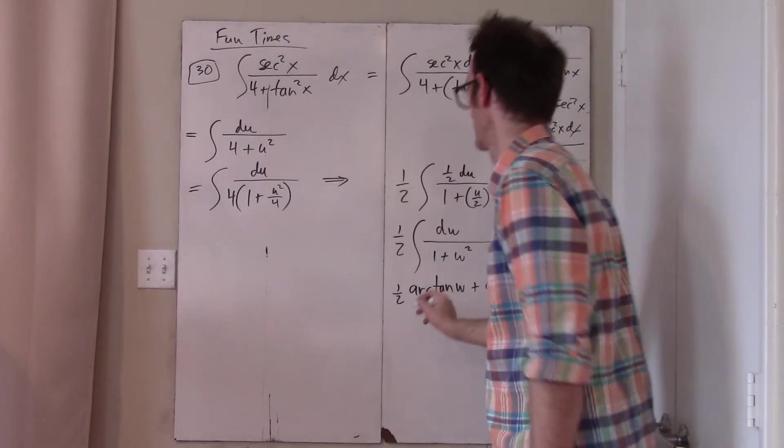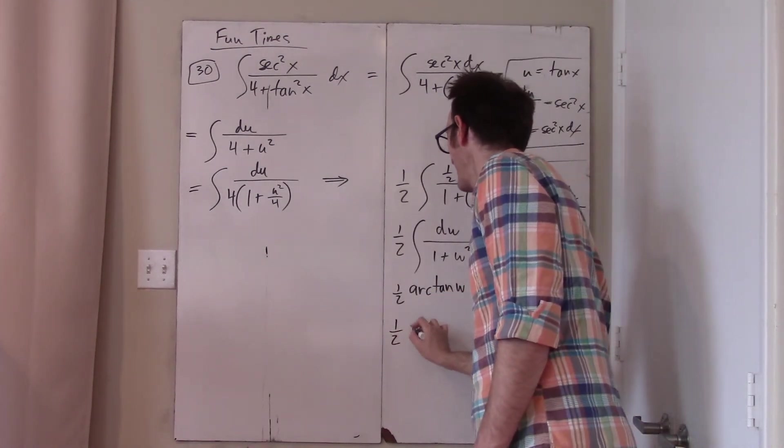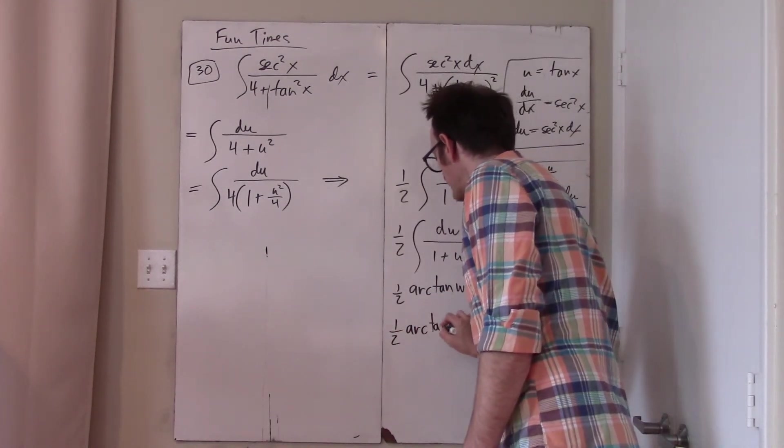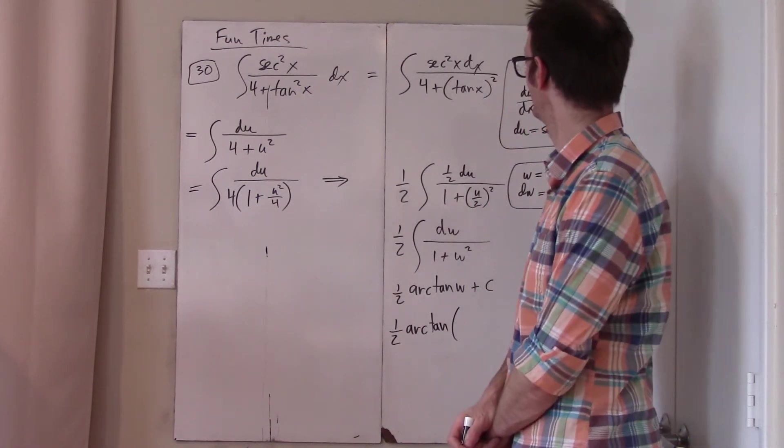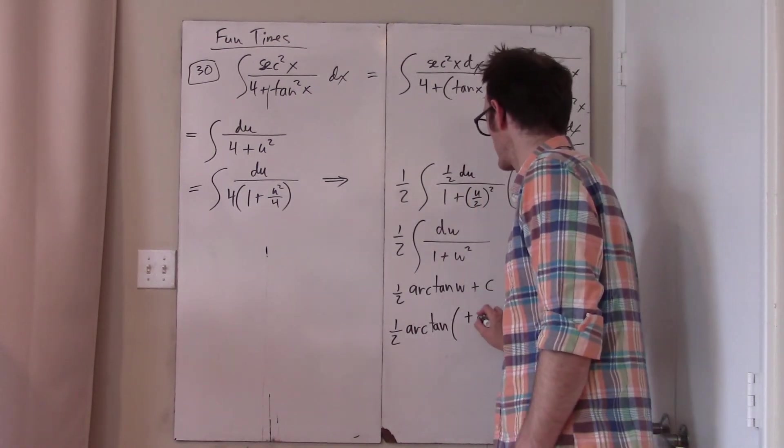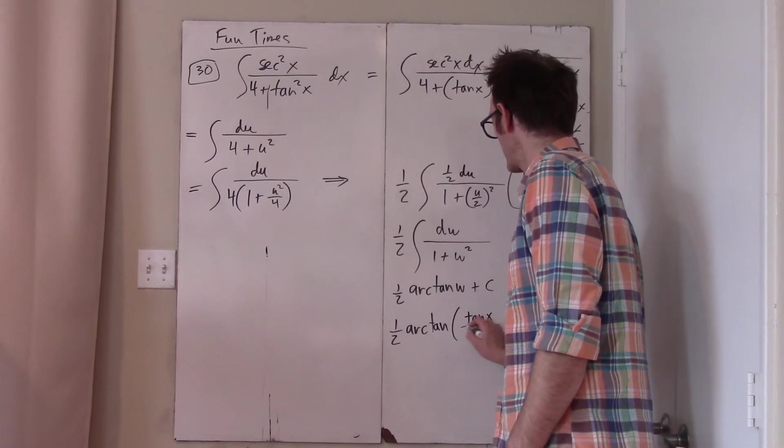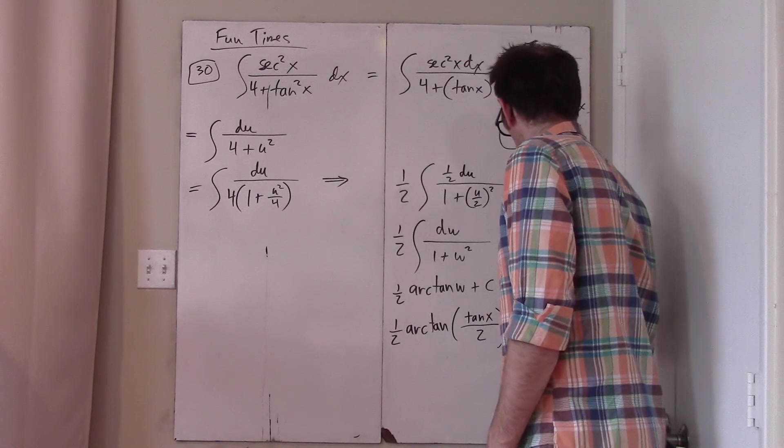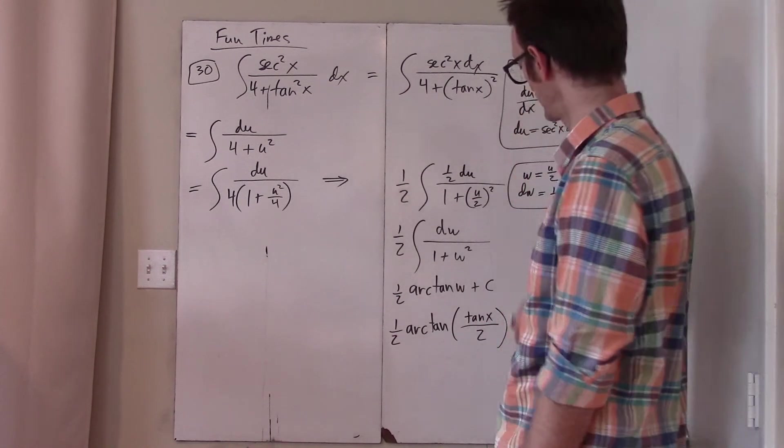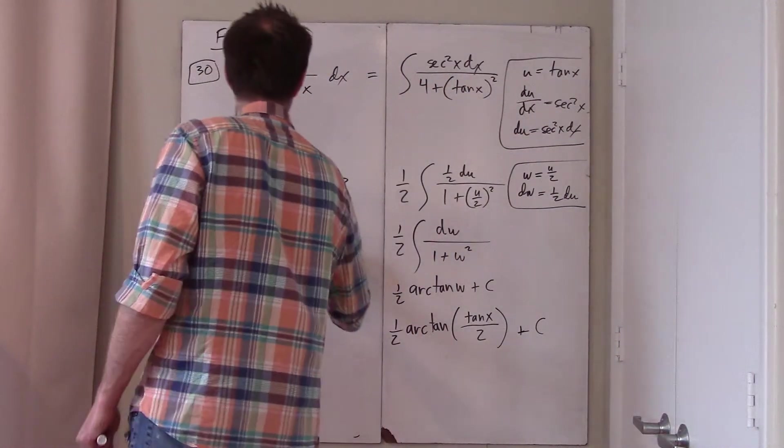But w is really u over 2, and u is really tan, so this whole thing is 1 half arctan of tan x over 2. I looked for some deeper way of understanding this or simplifying it, and I couldn't find it. Okay, good.